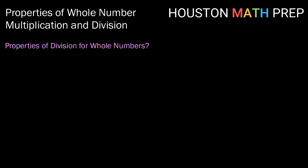Now that covers our properties for multiplication — what about division? If we remember from our video on properties of whole number addition and subtraction, addition had a whole lot of properties that subtraction did not. So let's go through the properties of multiplication and see if division holds. Let's think first about closure. If we take a simple example, 10 divided by 7, there is no whole number answer for this division problem, so division is not closed on the whole numbers.